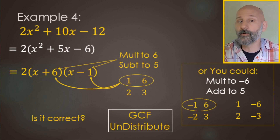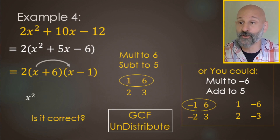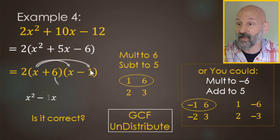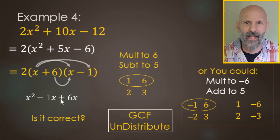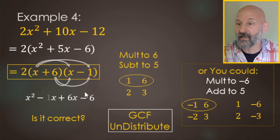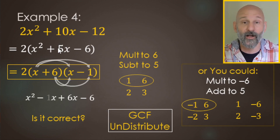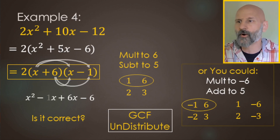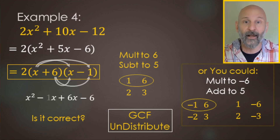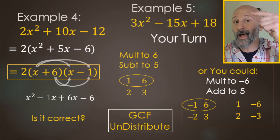Double check: x times x is x squared. x times negative 1 is negative x. For the inners, 6 times x is 6x and 6 times negative 1 is negative 6. So we have the negative 6, we have x squared, and the inners and outers — 6x minus x — make positive 5x. Then multiply the 2 back through all terms and we get our original expression back.